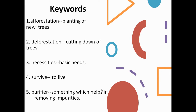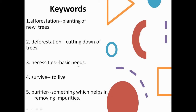Let us have a look at the keywords of this chapter. Afforestation: planting of new trees. Deforestation: cutting down of trees. Necessities: basic needs. Survive: to live. Purifier: something which helps in removing impurities. As you might have heard of a water purifier — in the same way, plants are an air purifier. They clean our air.